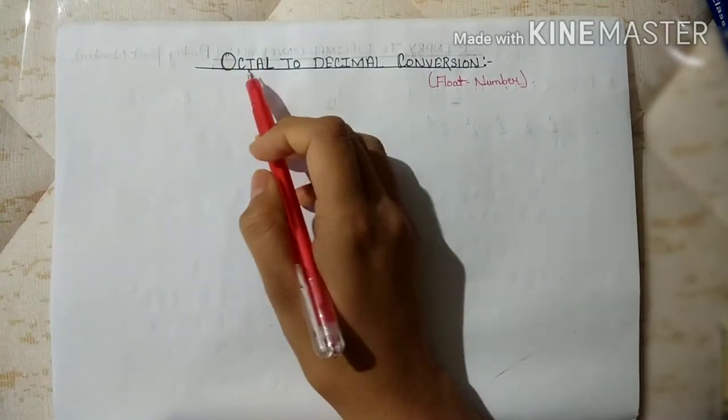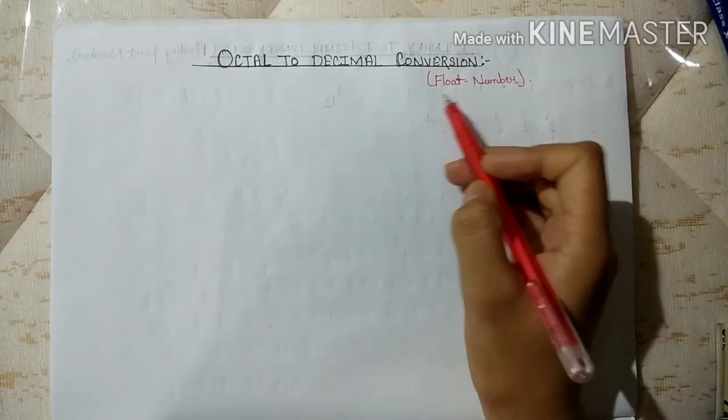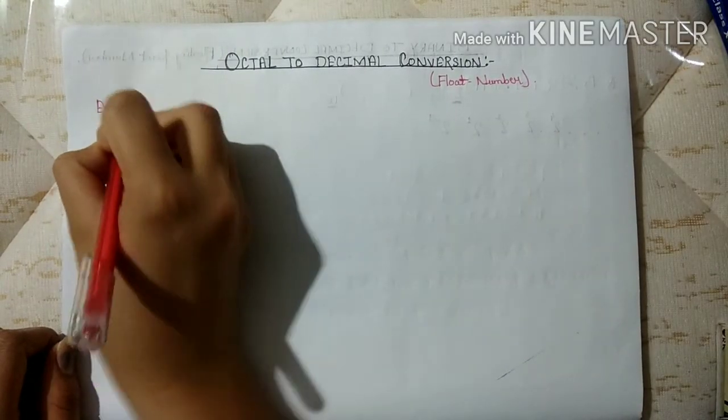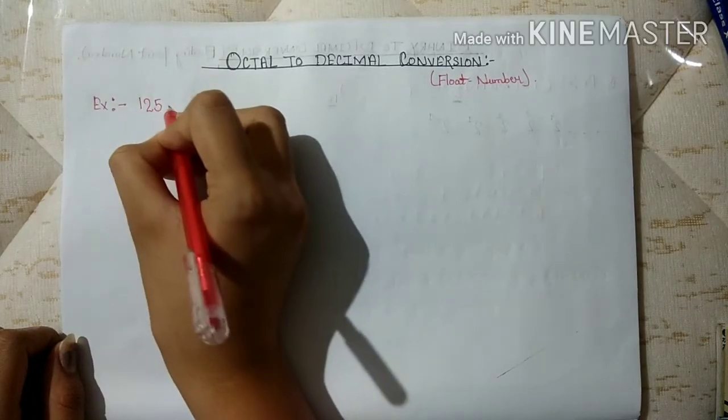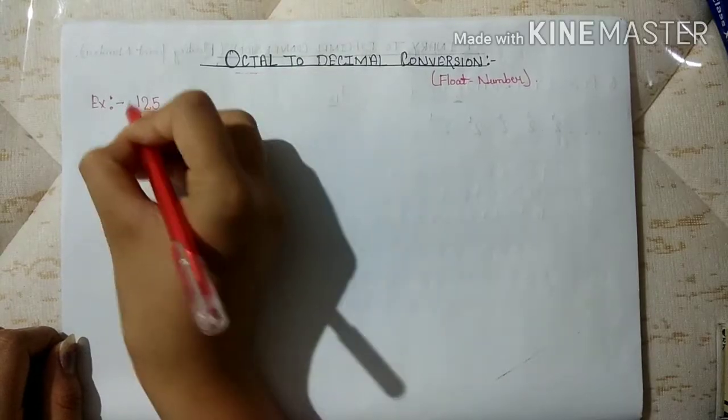Today we are going to see octal to decimal conversion of floating point number. Example, 125.102 which is in octal form.